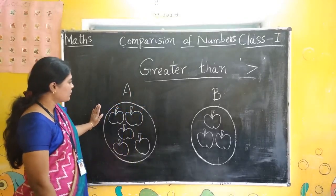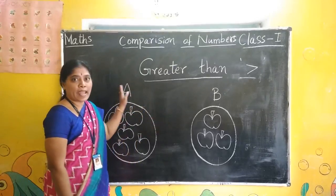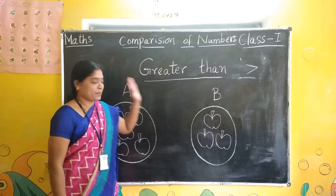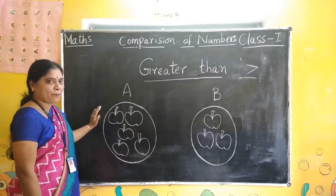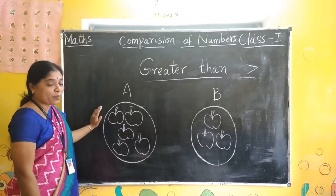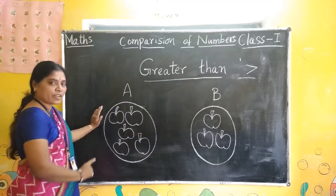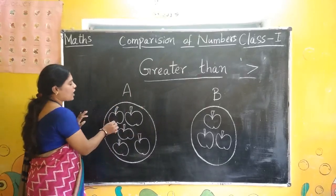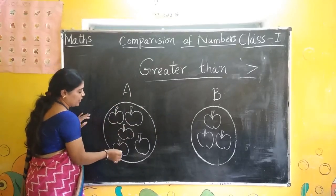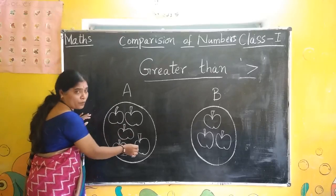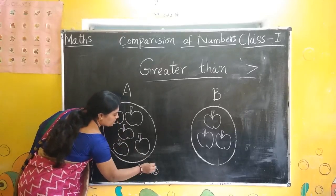Here we have two groups A and B. In this group we have some apples. How many apples? We will count it right here. Count it: 1, 2, 3, 4, 5. So write 5 here.